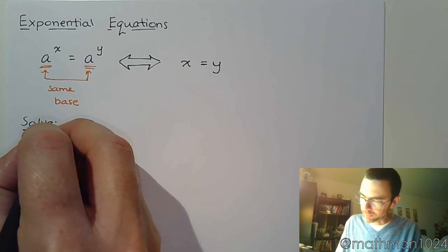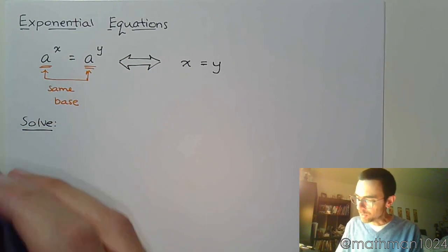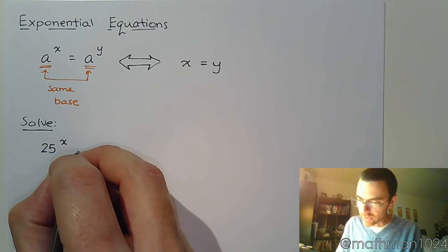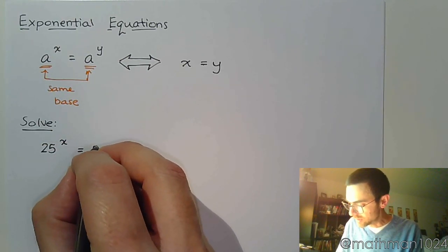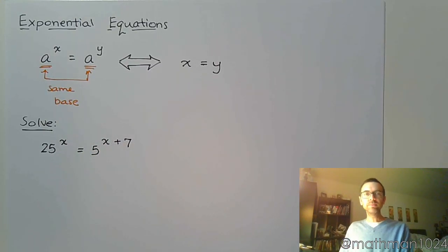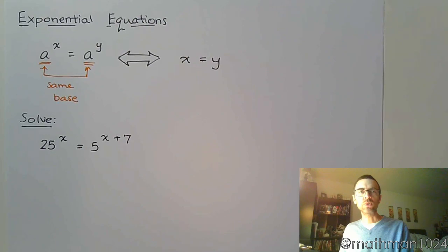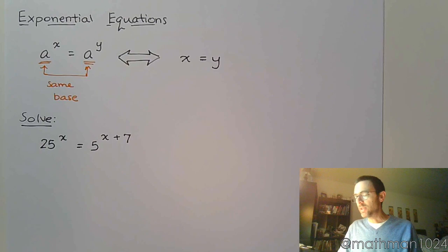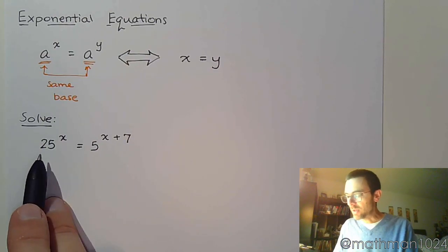If we start off with 25^x = 5^(x+7), what we're trying to do is rewrite this so that each side of the equation has the same base. This is where if you go back to that power sheet I gave you, it's pretty simple. When I look at 25 and 5, I can see these guys have a common base of 5.